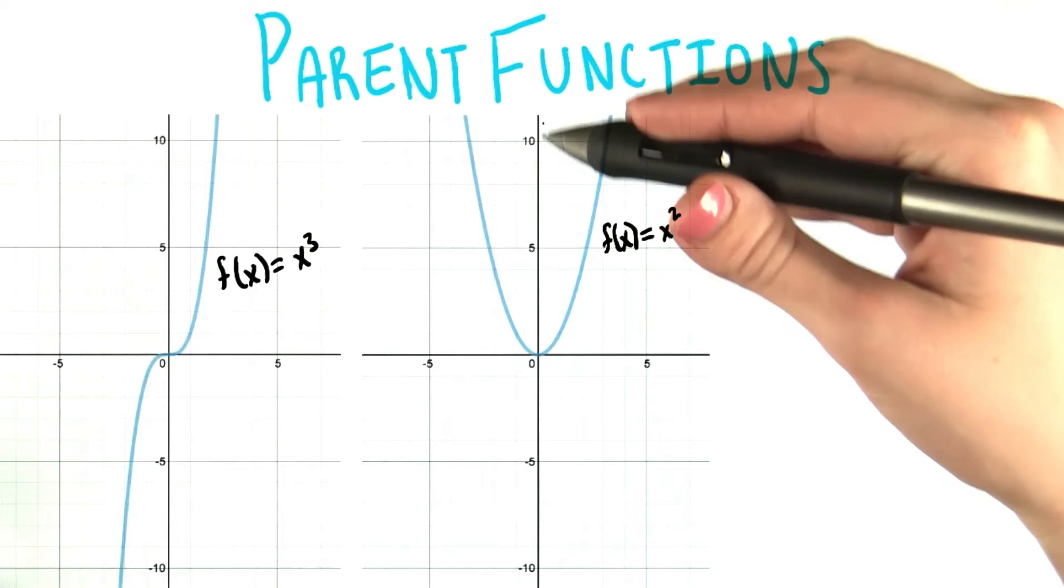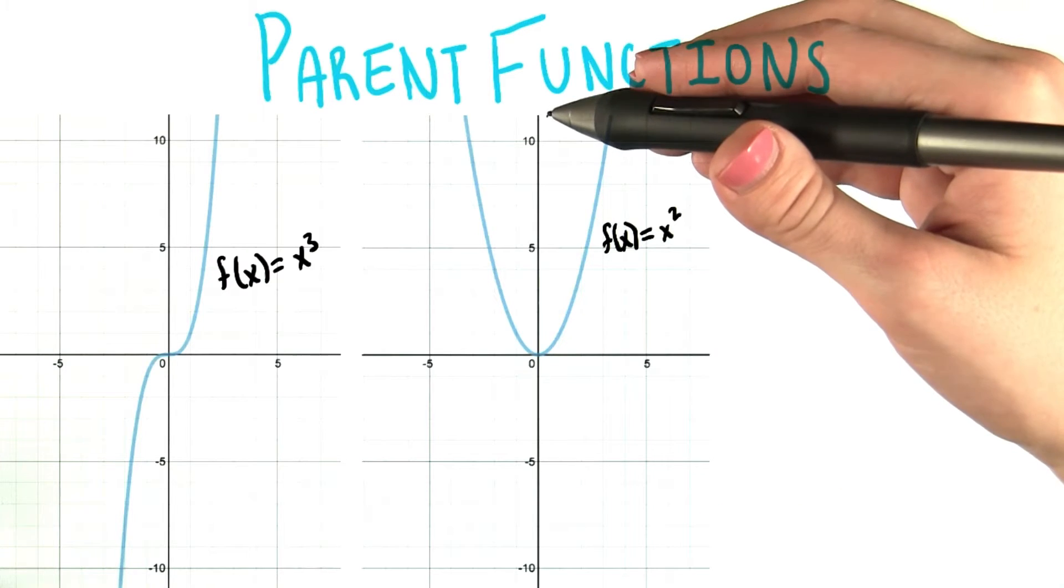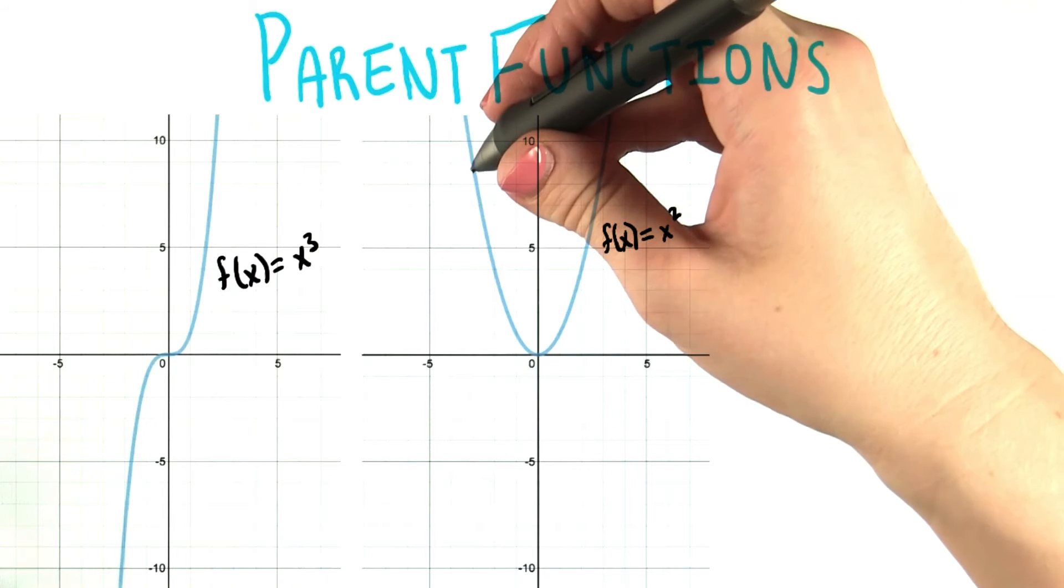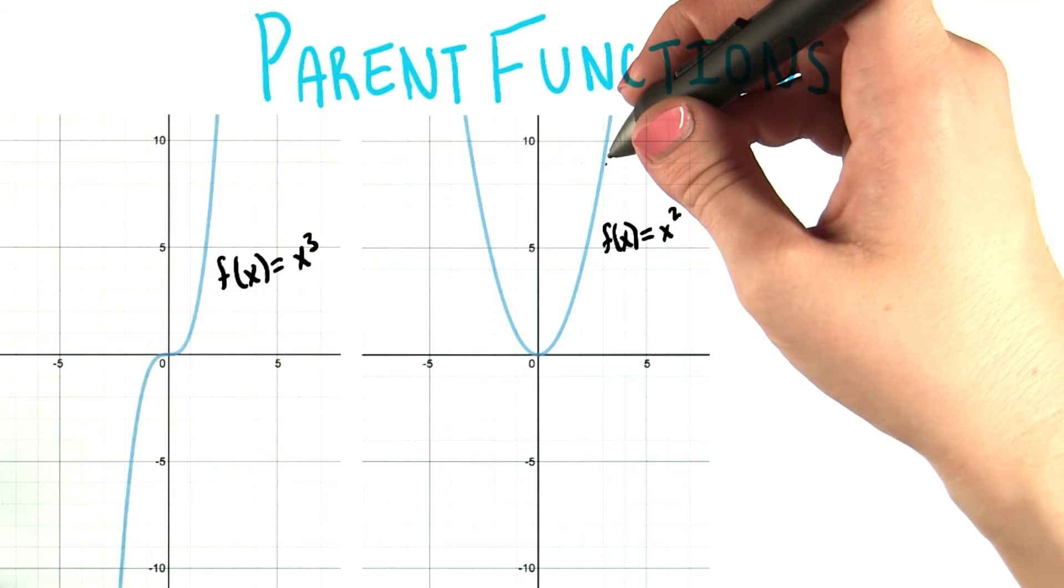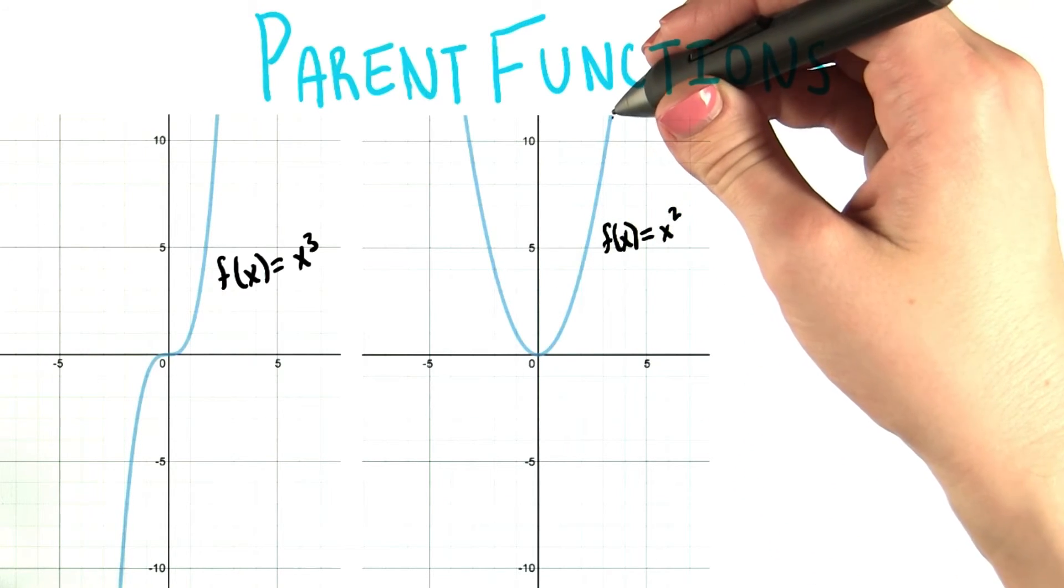We also talked earlier about how a parabola has an axis of symmetry running down the middle of it. So that if you fold the graph in half along that line, it will exactly map to the other side of itself.